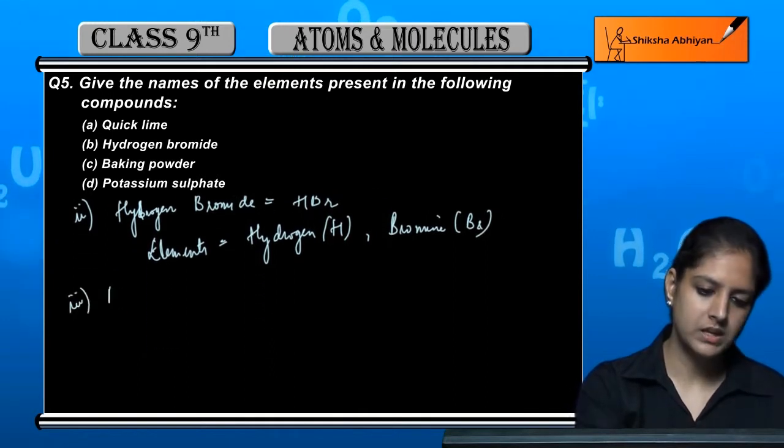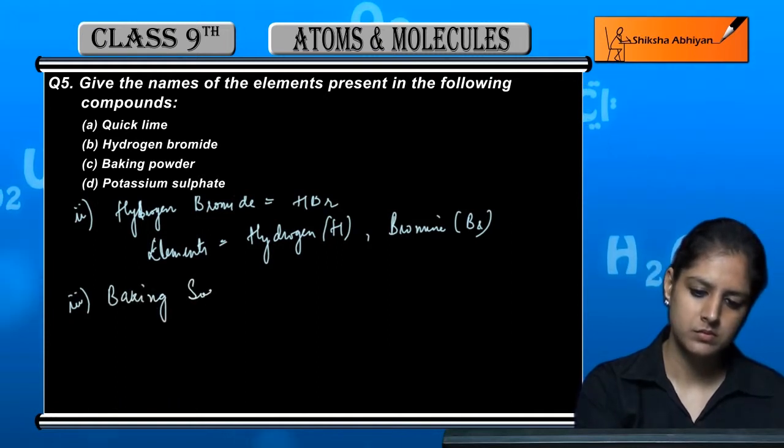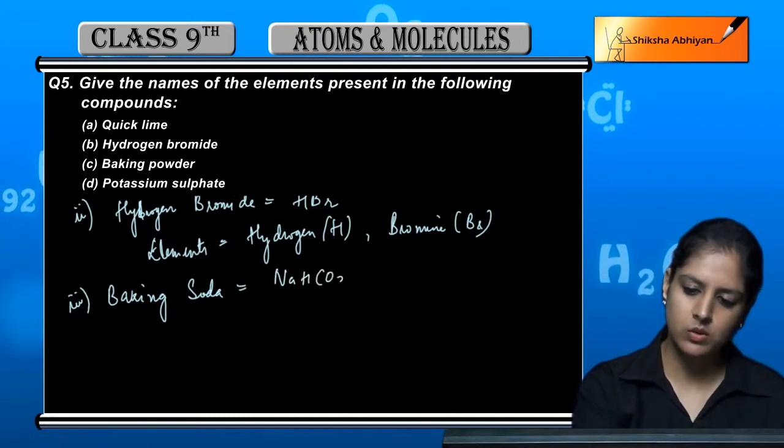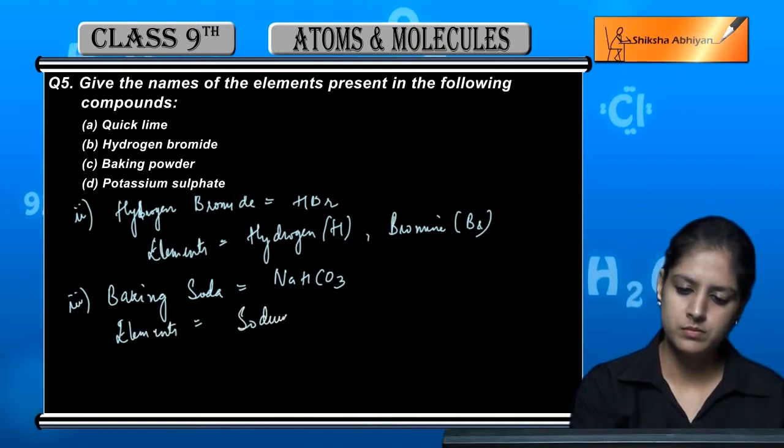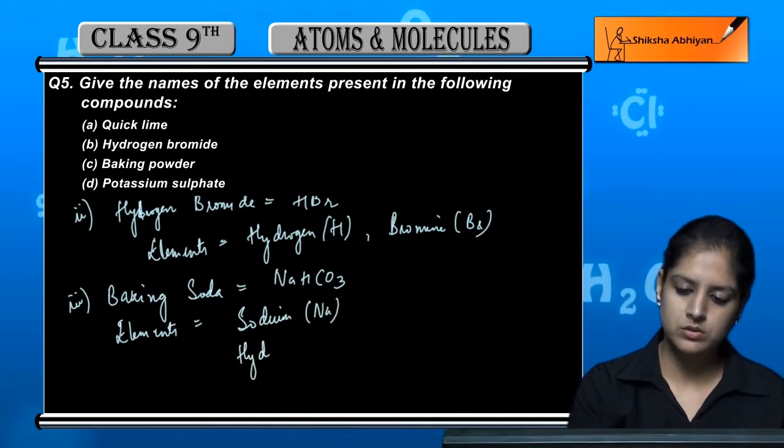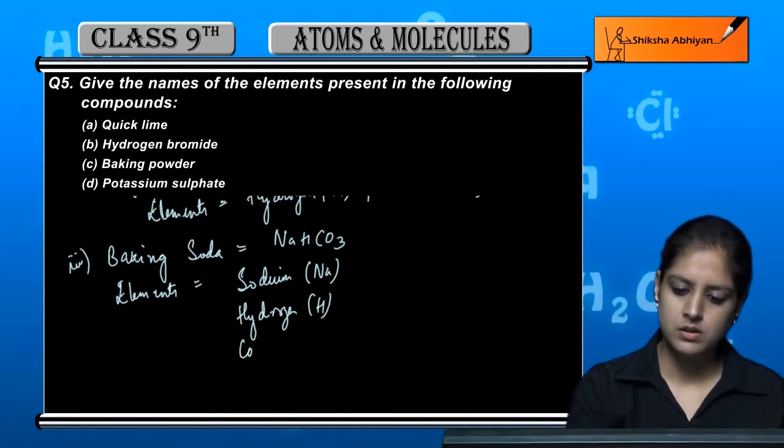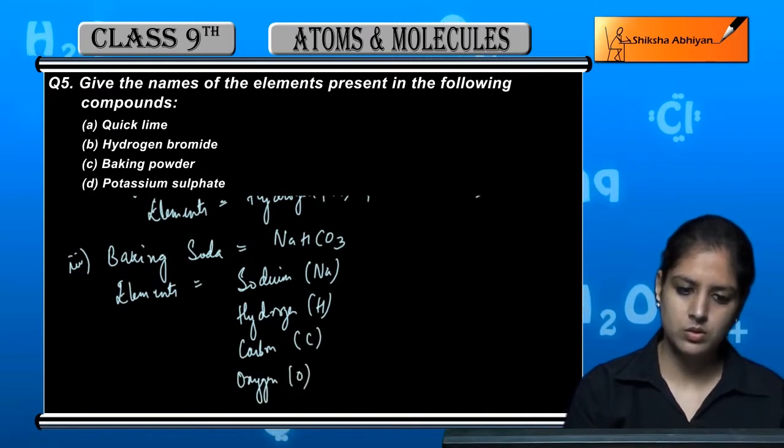Next is baking soda. Baking soda's formula is NaHCO3. The elements are sodium (Na), hydrogen (H), carbon (C), and oxygen (O).